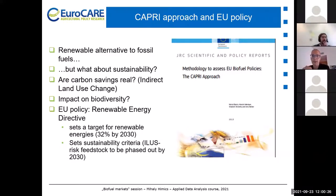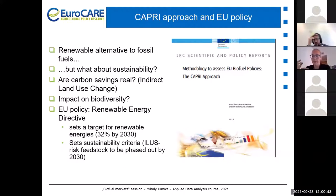I was talking about the indirect land use change, which is linked to biofuel production, and more closely to first generation production when we are using food crops or crops that are usually used for feeding animals for biofuel production. So there is an inherent competition between using the land for food production or for biofuel production — this is the indirect land use change.